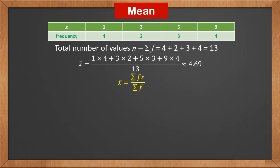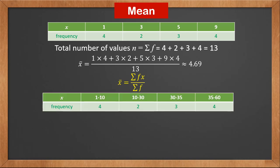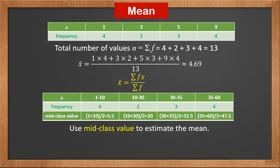So the mean x-bar is this sum divided by 13, which is 4.69. That leads to the formula of the mean for grouped data: sigma f times x, over sigma f. For class data, since the exact values in each class are unknown, we use the mid-class value to estimate the mean. For class 1 to 10, the mid-class value is (1 + 10) / 2 = 5.5. For class 10 to 30, the mid-class value is (10 + 30) / 2 = 20, and so on.